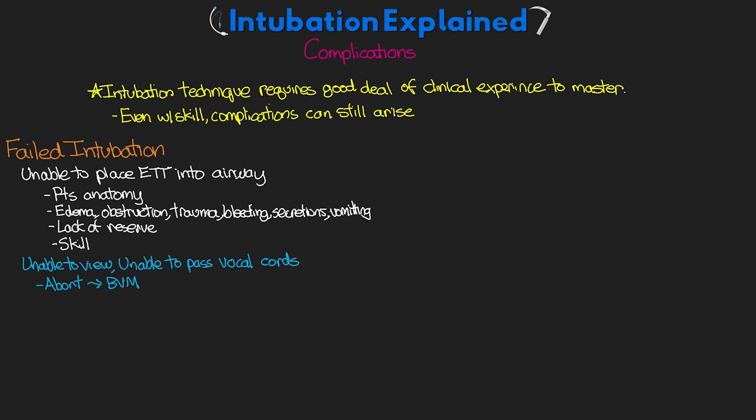Even worse though, sometimes the endotracheal tube can end up in the patient's esophagus. And it's important to know that this is a medical emergency when this happens. In these cases, our patients are not going to be ventilated and oxygenated immediately like in other aborted attempts. So I'm going to discuss this more in the next lesson, but in these cases, it needs to be immediately removed and then intubation needs to be reattempted.